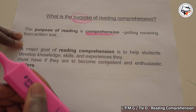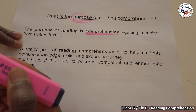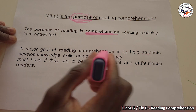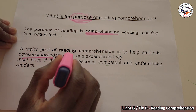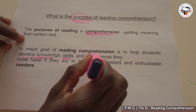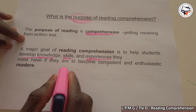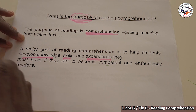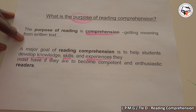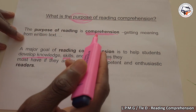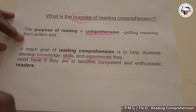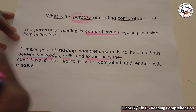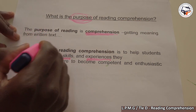The major goal of reading comprehension is to help students develop their knowledge, develop their skills, and experiences they must have if they are to become competent and enthusiastic readers. Getting meaning from written text — there are many kinds of texts. The major goal of reading is to help students develop knowledge, skills, and experiences to become competent readers.